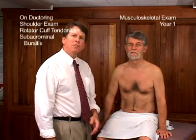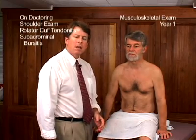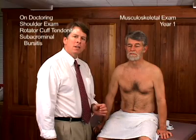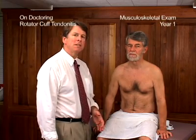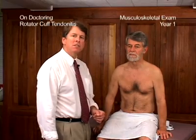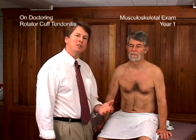Remember that rotator cuff tendinitis is also known as subacromial bursitis. This process involves tears primarily in the distal supraspinatus tendon, though it can occur in many different sites in the rotator cuff musculature. In general, the most common pathology involves the supraspinatus tendon. The subacromial bursa lies around the supraspinatus tendon near its insertion point on the greater tuberosity of the humerus — hence the use of subacromial bursitis as a synonym for rotator cuff tendinitis.